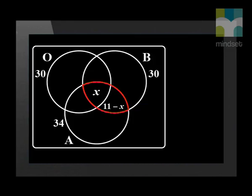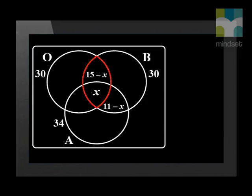It is also given that 15 liked oranges and bananas, which means that the intersection between O and B must add up to 15. Thus, we can fill in that this area will be 15 minus X. 17 liked oranges and apricots, which means that the intersection between O and A is 17 minus X.